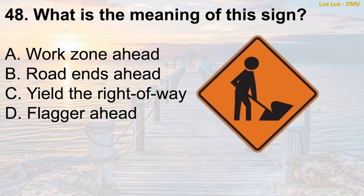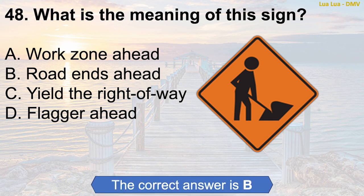Question 48: What is the meaning of this sign? A. Work zone ahead. B. Road ends ahead. C. Yield the right of way. D. Flagger ahead. The correct answer is B: Road ends ahead.